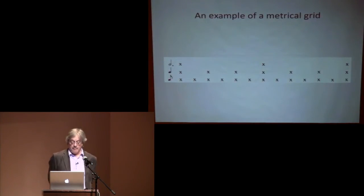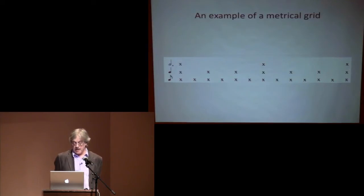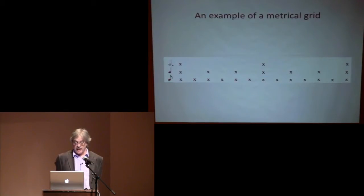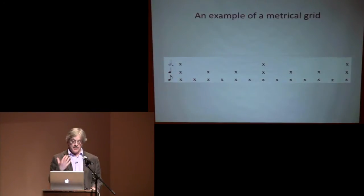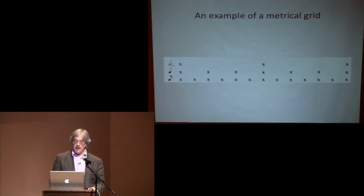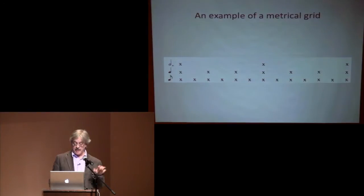Here's an example of a metrical grid. The bottom level, designated as the eighth-note level, is essentially isochronous — periodic. Beats that are felt to be strong at that level become beats at the next larger level. At the quarter-note level we have every two beats; at the dotted half-note level, every three beats, giving us a three-four meter. A meter is basically superimposed periodicities that are in phase.